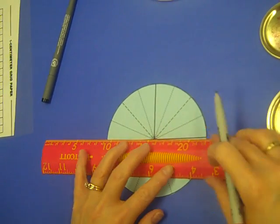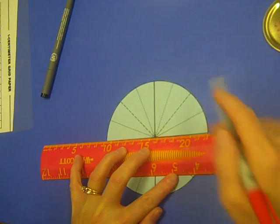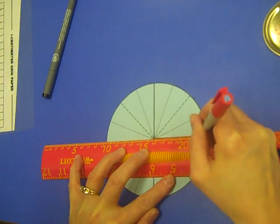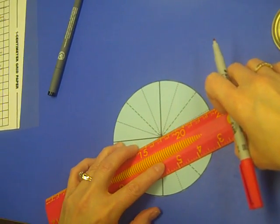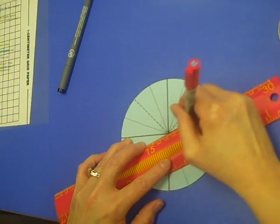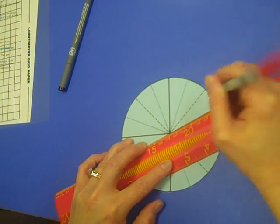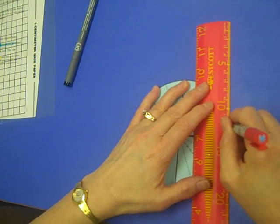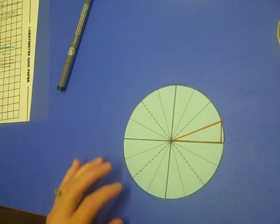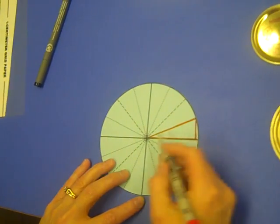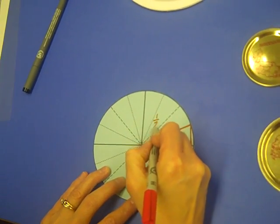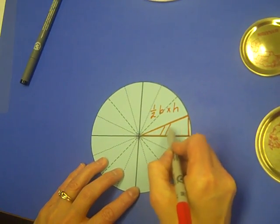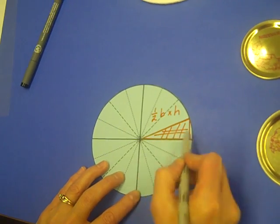If I found the area for one triangle, and then multiplied it by the number of triangles that I've got in this particular circle, then I could find the area for that. So if I went back to my formula one-half base times height, I could find what's in here.